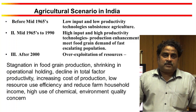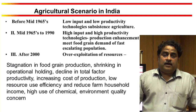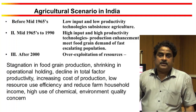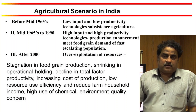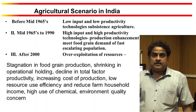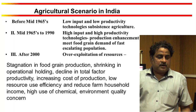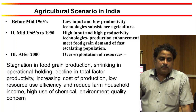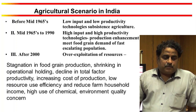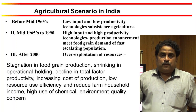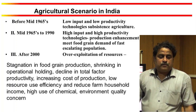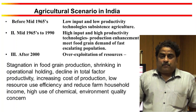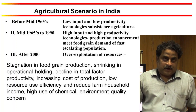But after 2000, the third phase began, where we see that due to over-exploitation of resources, there is stagnation in food grain production, sinking of operational holdings, declining total factor productivity, increasing cost of production, low resource use efficiency, reduced farm household income, and high use of chemicals causing deteriorating environmental quality.